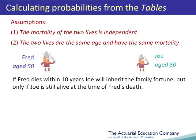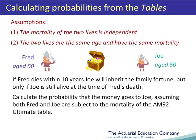If Fred dies within 10 years, Joe will inherit the family fortune, but only if Joe is still alive at the time of Fred's death. Let's calculate the probability that the money goes to Joe, assuming both Fred and Joe are subject to the mortality of the AM92 ultimate table. Joe gets the money if Fred dies within 10 years, which has probability 10q50. But also Fred needs to be first out of him and Joe to die, so we write in Joe's age 50 and put a 1 over Fred's age. And so this is the required probability.